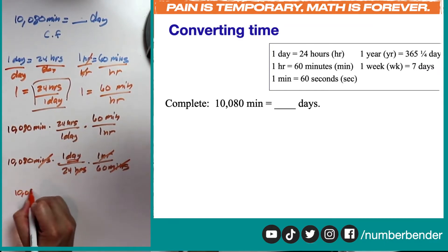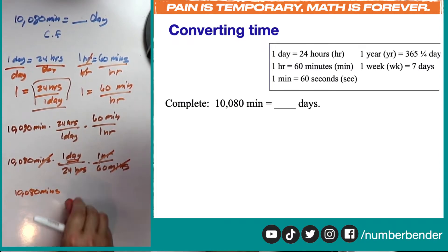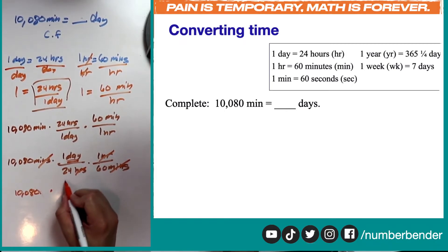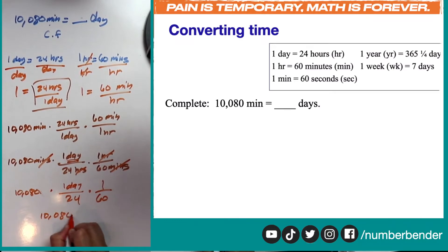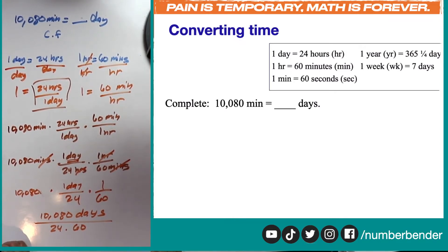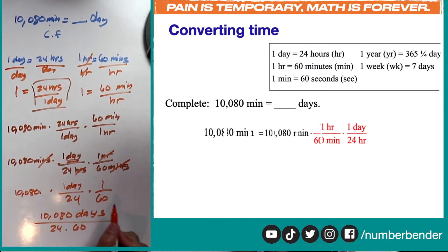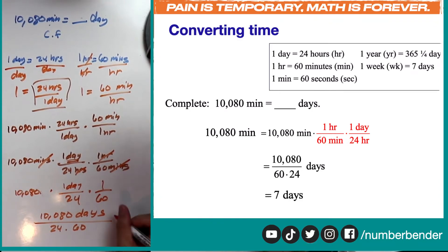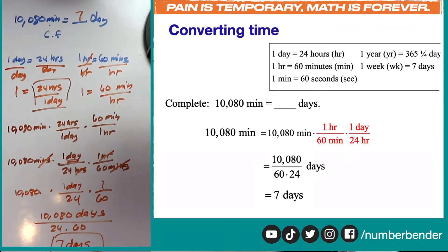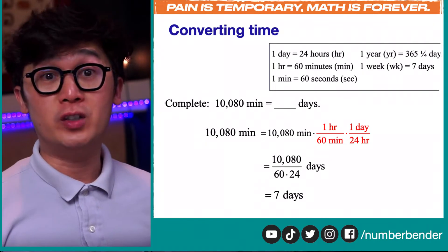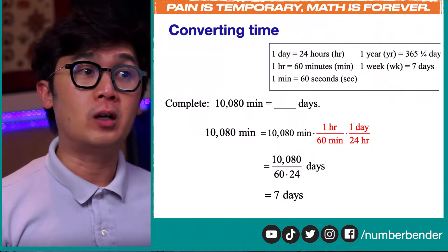So we have 10,080 minutes times one day over 24, times one over 60. This gives us 10,080 days over 24 times 60. Using our calculator, we compute 24 times 60 and divide into 10,080, which gives us 7 days. So 10,080 minutes equals 7 days using our conversion factor method and the cheat sheet.